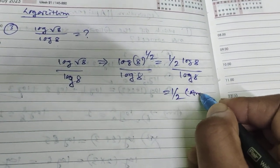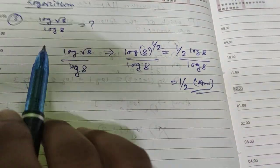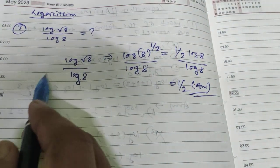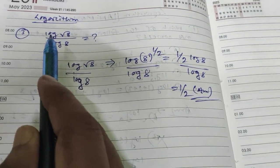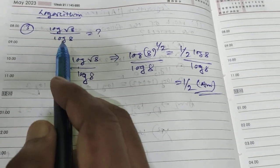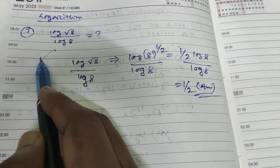For any question in this format - like log root 6 divided by log 6 - you can directly get the answer as 1/2, since the power is 1/2.